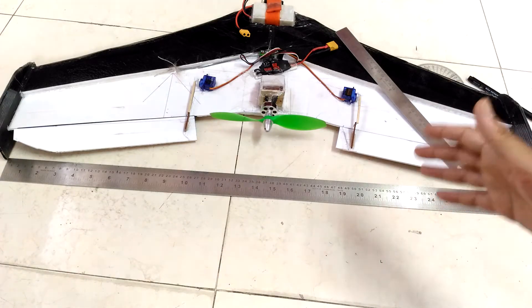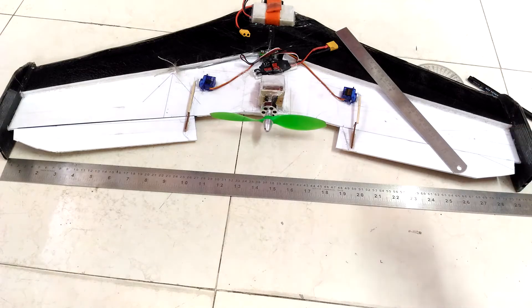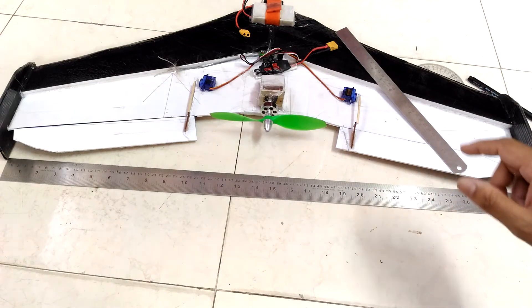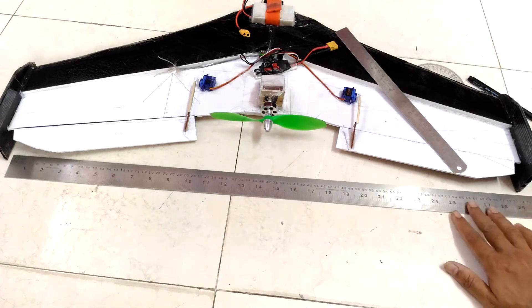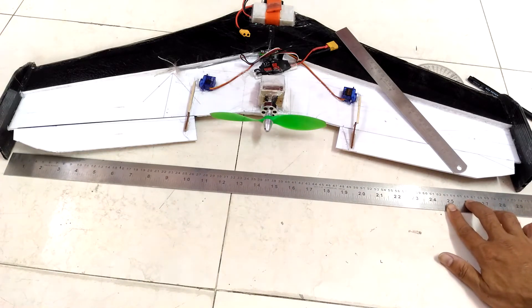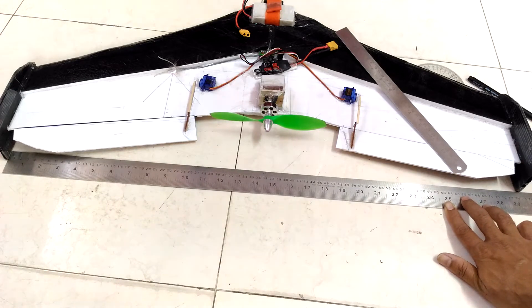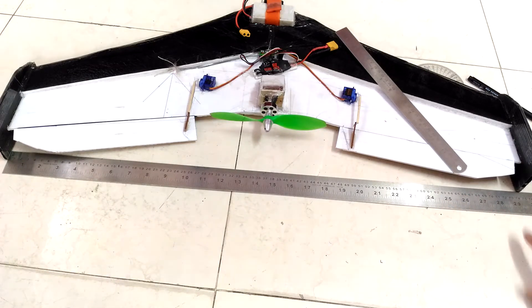Starting with the wingspan, let me just put the ruler inside the fins on both ends. So that is 740 millimeters or 74 centimeters. It's just above the 29 inch mark. So that is the wingspan: 740mm or 74 centimeters.